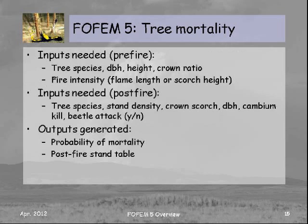Inputs needed for pre-fire mortality are the general tree data you'd collect anyway: species, DBH, height, crown ratio, and the fire intensity input by the user. For post-fire assessment, it's mostly the same information, plus a cambium kill rating — you divide the bole into quadrants and sample the cambium in each to assess whether it's alive. In some species, beetle attack is also a significant mortality factor. The outputs include probability of mortality for every tree and size class, and a post-fire stand table.